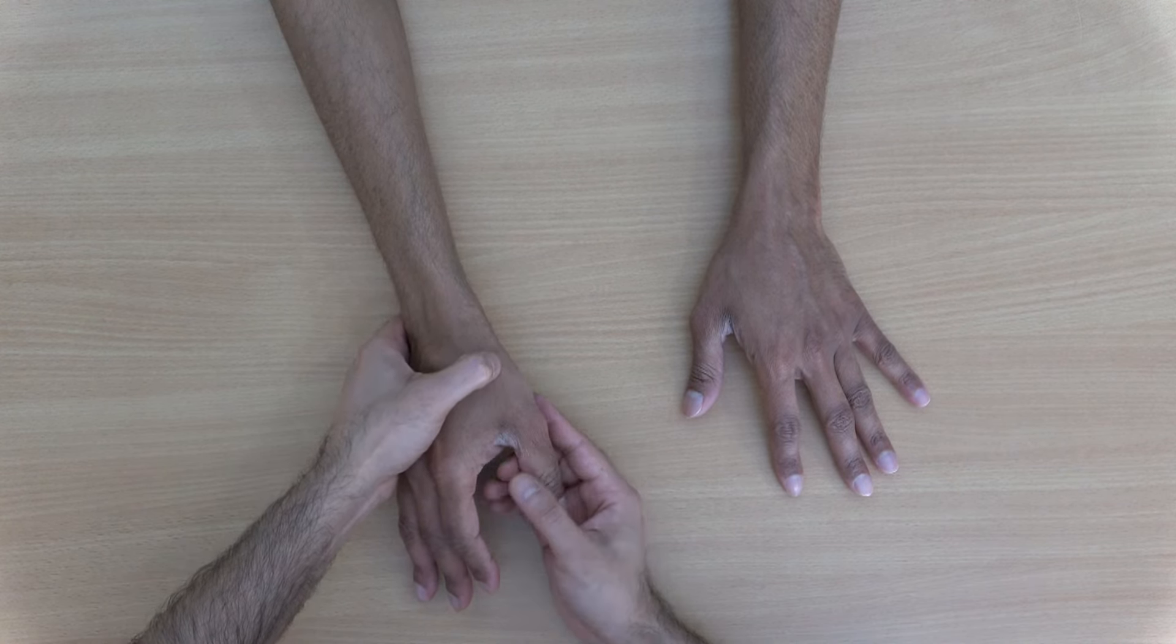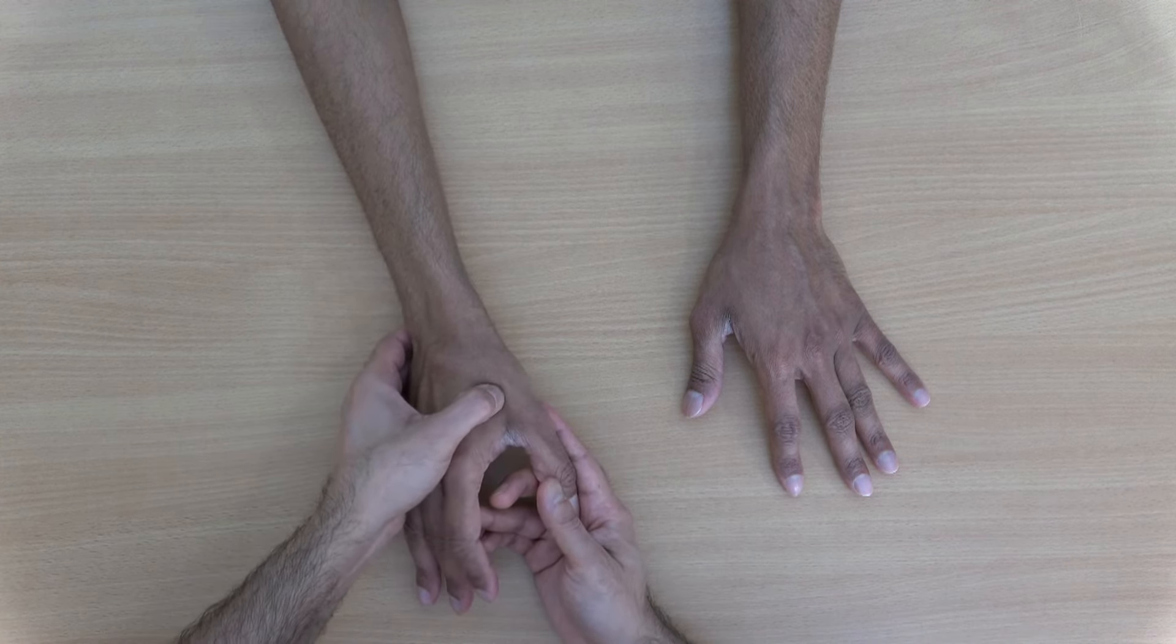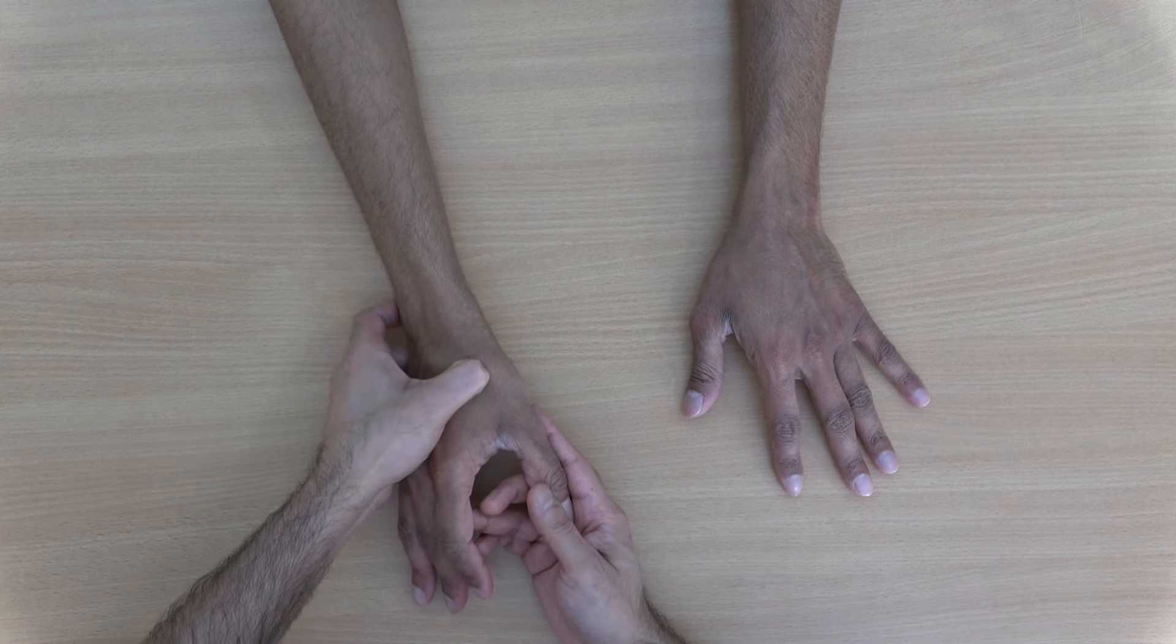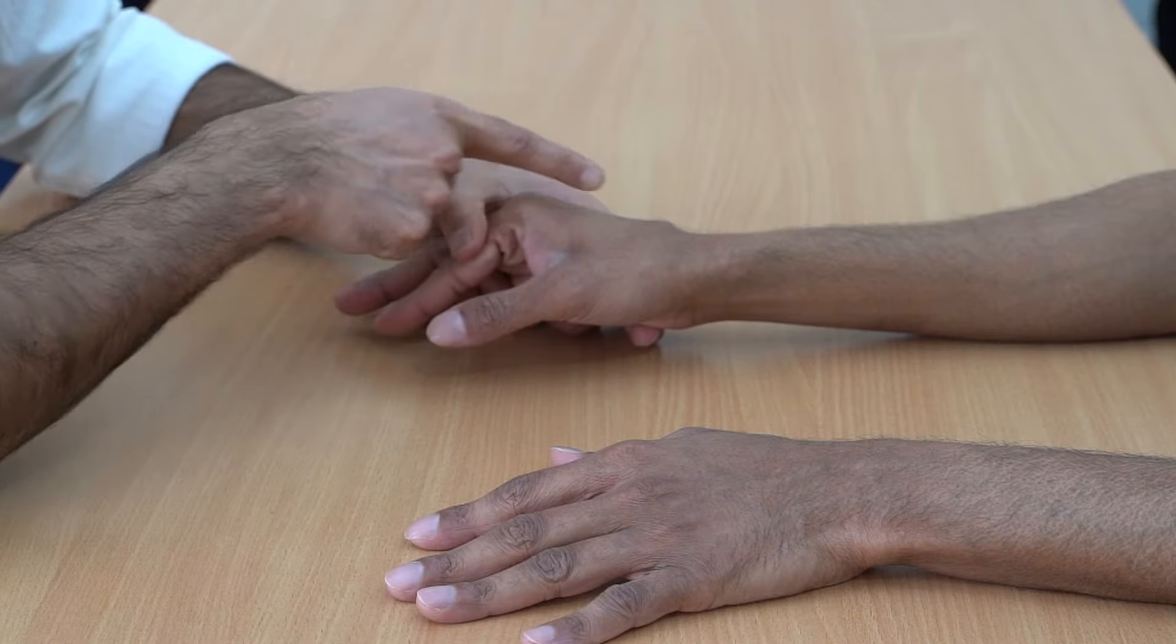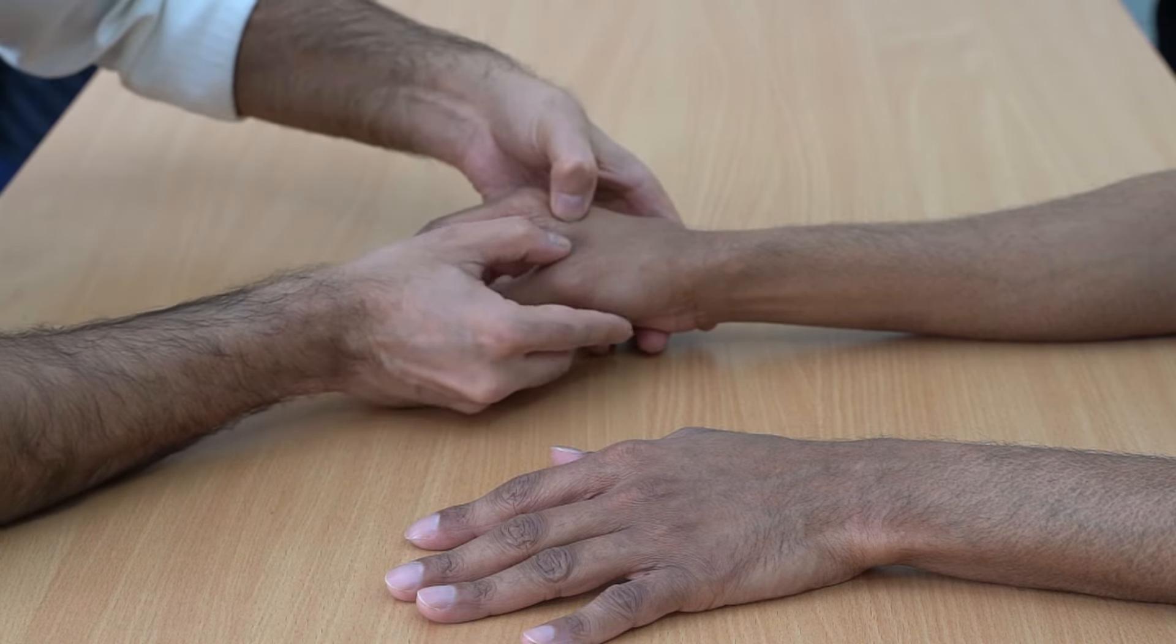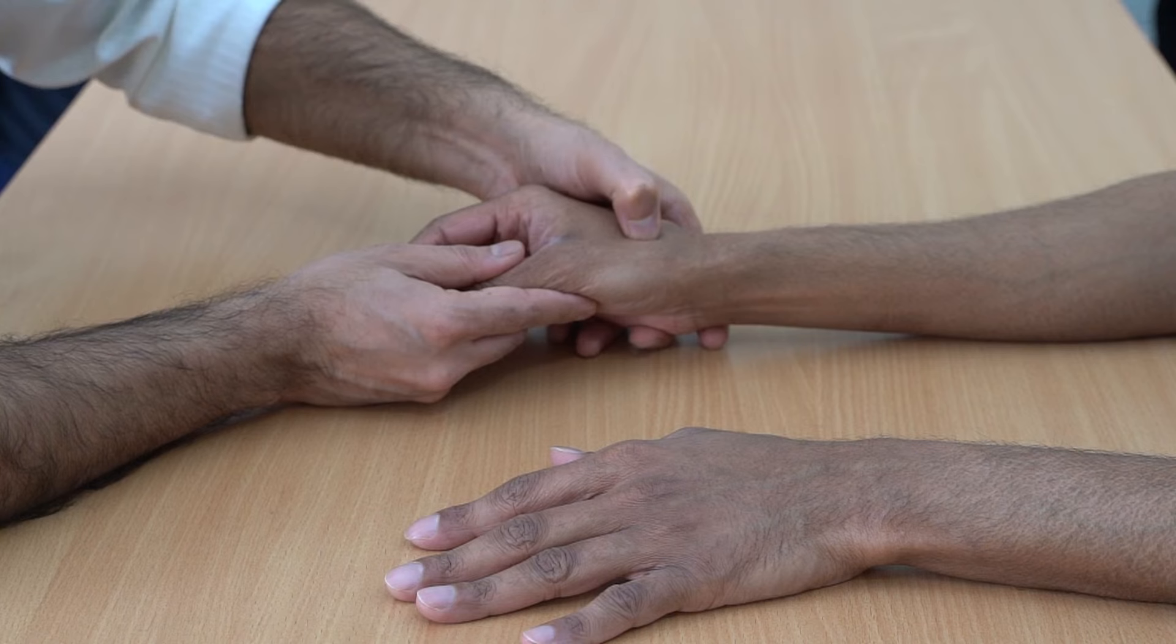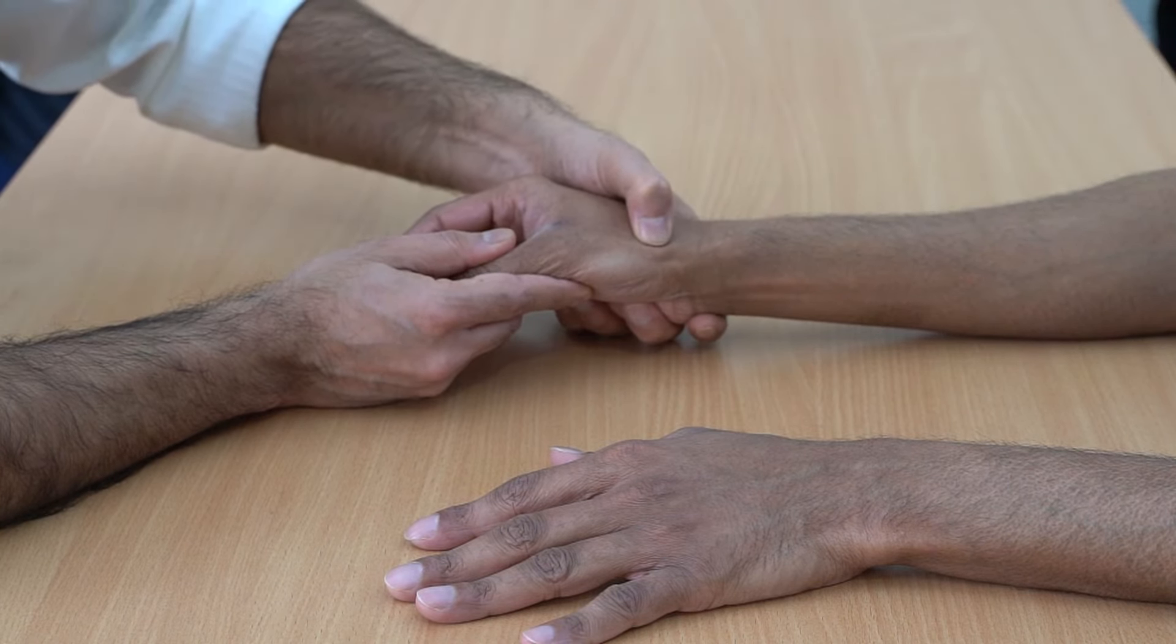To find the joint what I do is I feel for the border of the bone and I move back gently and I come to a point where the metacarpal of the index finger and the metacarpal of the thumb, they both meet. So I can easily go back and palpate this point and where they both meet, just next to that radially is your CMC joint.